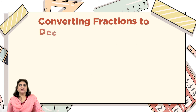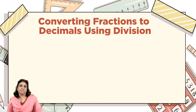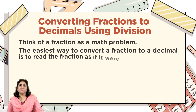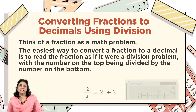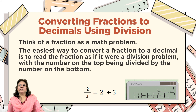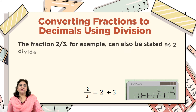Converting fractions to decimals using division. Think of a fraction as a math problem. The easiest way to convert a fraction to a decimal is to read the fraction as if it were a division problem, with the number on top being divided by the number on the bottom. For example, the fraction 2/3 can be stated as two divided by three.